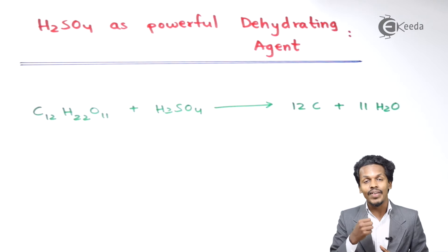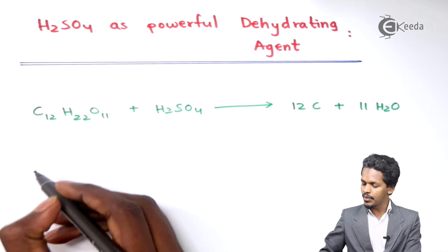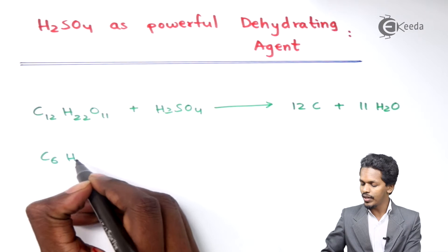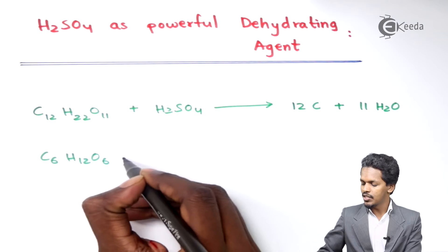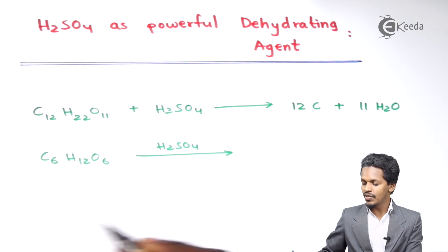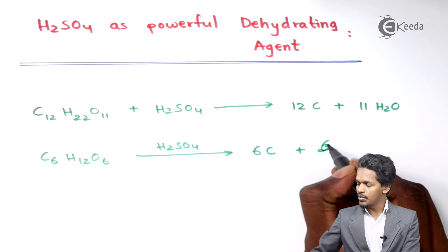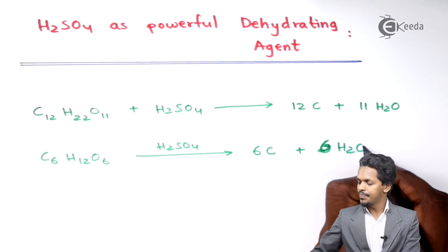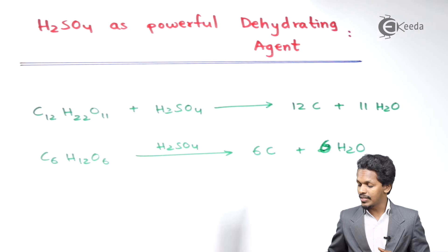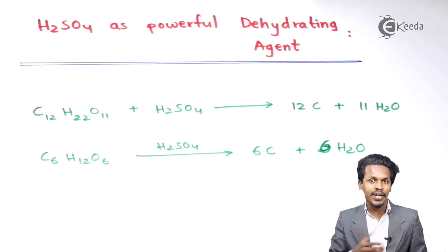This is one example proving H2SO4 is a very powerful dehydrating agent. Similarly, if we take glucose — C6H12O6 — and add H2SO4, the reaction proceeds such that we get 6 moles of carbon along with 6 moles of H2O. This reaction also proves that H2SO4 is a very good dehydrating agent.